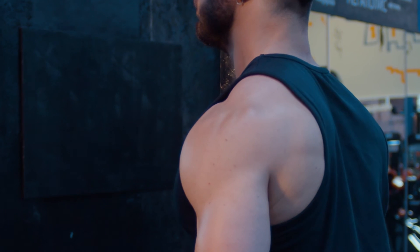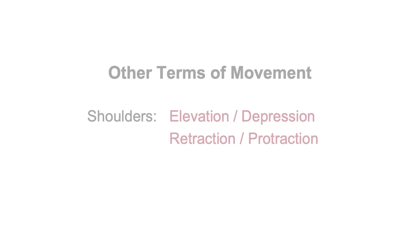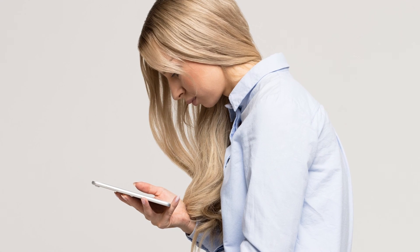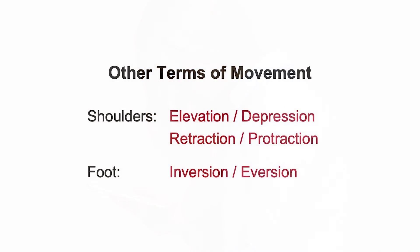Let's look at a couple of other movements. When you elevate your shoulders, you bring them up towards your ears in a shrug-type movement. When you return them to resting or lower them further, you're depressing them. You can also perform retraction of your shoulder blades by pulling them back together, and protraction when you roll your shoulders forward — protracted shoulders are seen in someone with slouched posture. Finally, the foot can invert so the soles face towards the median plane, or evert so the soles face away from the median plane.